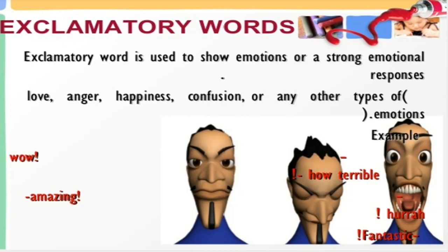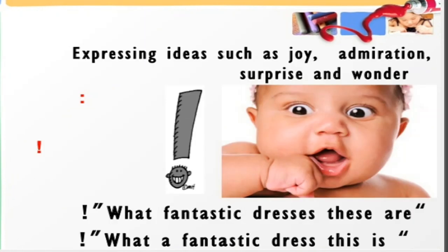Strong feelings can be in the form of love, anger, happiness, confusion, or any other type of emotion. Examples of exclamatory words include: wow, amazing, how terrible, hooray, fantastic — these are all mental states or strong feelings. For example: 'Wow, that's great!' ends with an exclamation mark. 'Hooray, we won the match!' — after hooray we find the exclamation mark. It can also express joy, admiration, surprise and wonder — such as 'What a fantastic dress this is!'